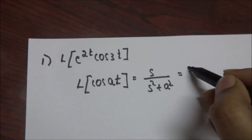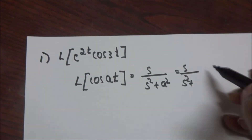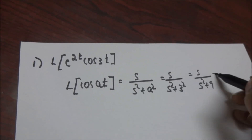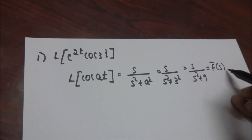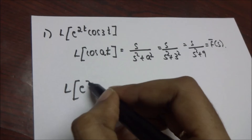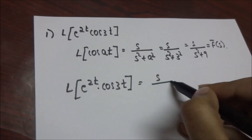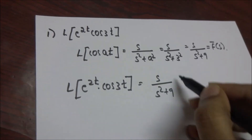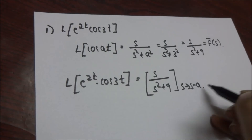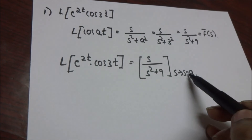The Laplace transform formula for cos(at) is s divided by (s² plus a²). Here we have cos(3t), so a equals 3, giving us s divided by (s² plus 3²), which equals s divided by (s² plus 9). So f(s) equals s over (s² plus 9) for cos(3t). Since we have e^(2t), here a is equal to 2, so we replace s by s minus 2.